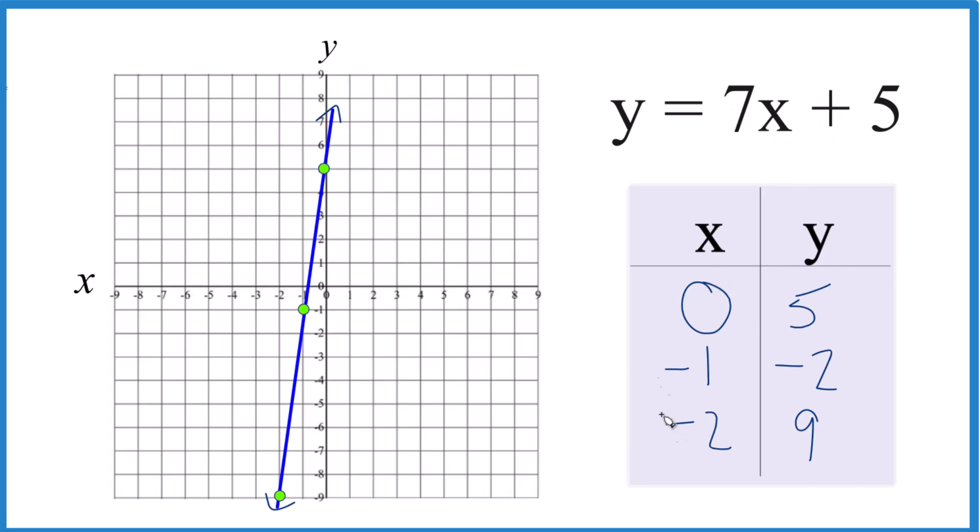You can put any values in for x. You'll get values for y. When you plot them, they'll be somewhere on the line. I just chose these values because I thought they would fit on the graph paper fairly well.